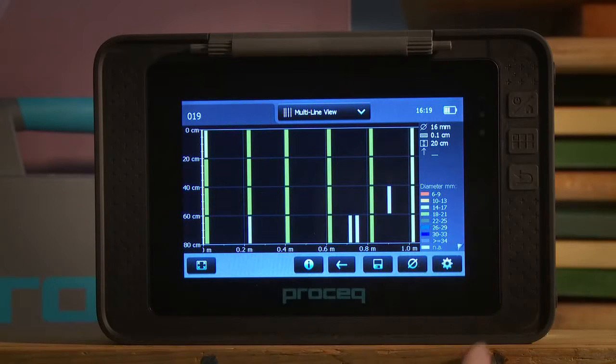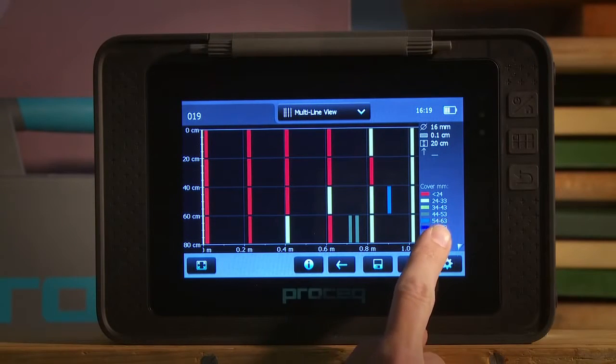After saving in the multi-line view, the user can switch between cover or diameter values as shown.